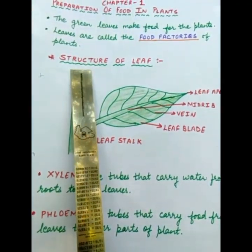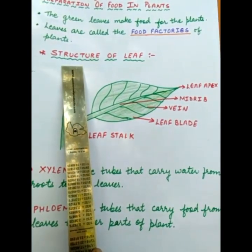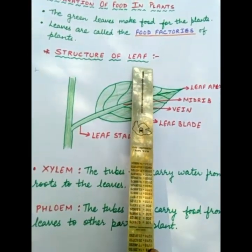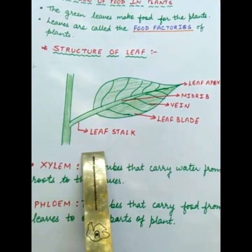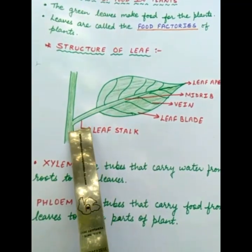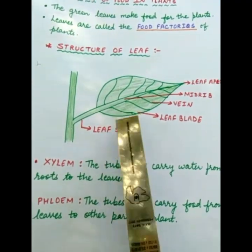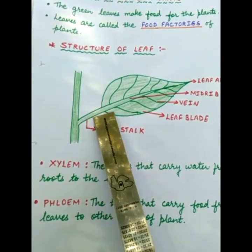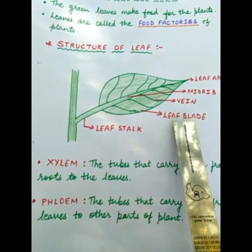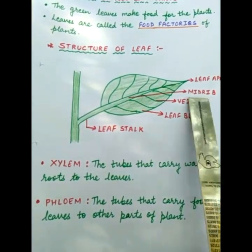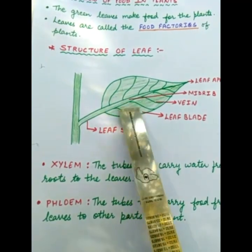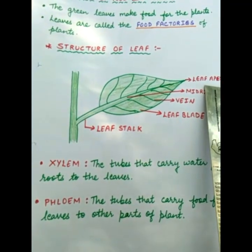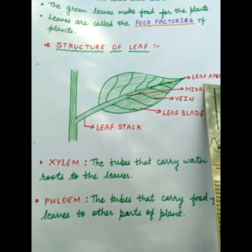Leaves are very important because the food that the plant makes is prepared in the leaves. We will discuss the structure of a leaf. Have you seen a leaf? We will see the leaf in a diagram. This part of the leaf which joins the stem and the leaf is called the leaf stalk. The flat part of the leaf is called the leaf blade. The middle portion of the leaf is called the leaf midrib. The other veins are the ones coming out from the midrib. The pointed tip or end of the leaf is called the leaf apex.